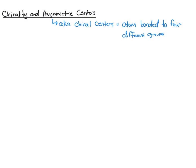But I'm going to stick with the term either asymmetric center or chiral center. And what that is, is it's a specific atom, typically carbon that we're going to be looking at, but an atom that's bonded to four different groups. And the key here is different.